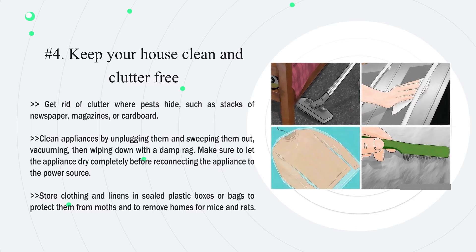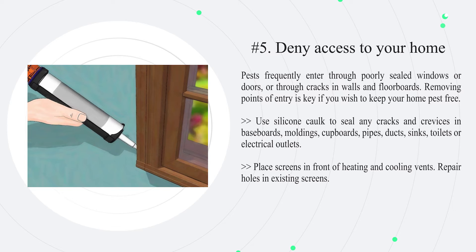Clean appliances by unplugging them and sweeping them out, vacuuming, then wiping down with a damp rag. Make sure to let the appliance dry completely before reconnecting it to the power source. Store clothing and linens in sealed plastic boxes or bags to protect them from moths and to remove homes for mice and rats.